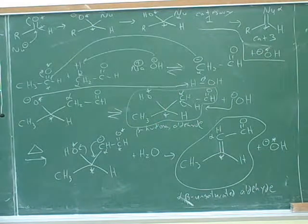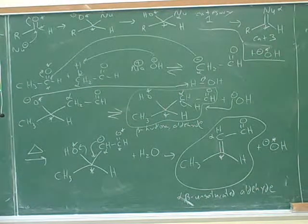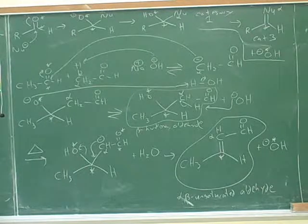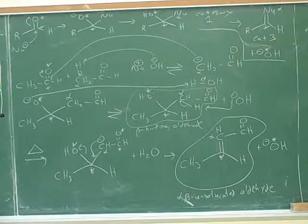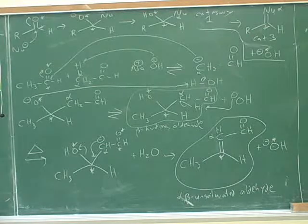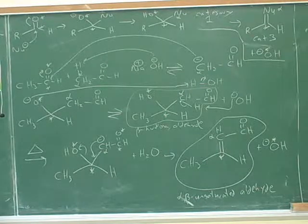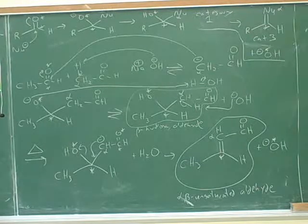Let's confirm this in our handout. Let's find the page for the aldol condensation — that's page four. Aldol condensation on page four. You can see it can either be category one or category three. And in both cases, the nucleophile is the alpha carbon in the enolate. So you don't have any trouble on top.